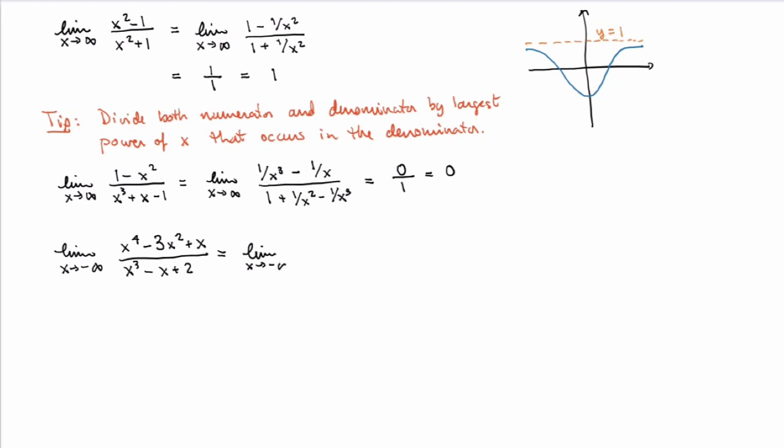For limits at infinity, just as for other limits, you can get three different cases: a finite value (which could be zero), an infinite limit (plus or minus infinity), or a limit that does not exist.